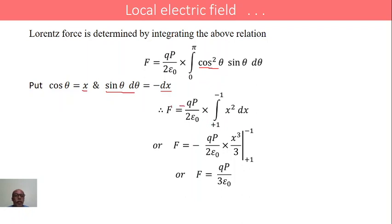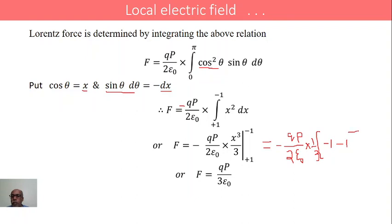Therefore F equals minus QP by 2ε₀ into the integral of x² dx, which evaluates to x³ by 3, with limits plus 1 and minus 1. Substituting the limits: x³ at minus 1 is minus 1, and at plus 1 is 1, giving minus 1 minus 1 equals minus 2. The minus signs cancel, and therefore F equals QP by 3ε₀.